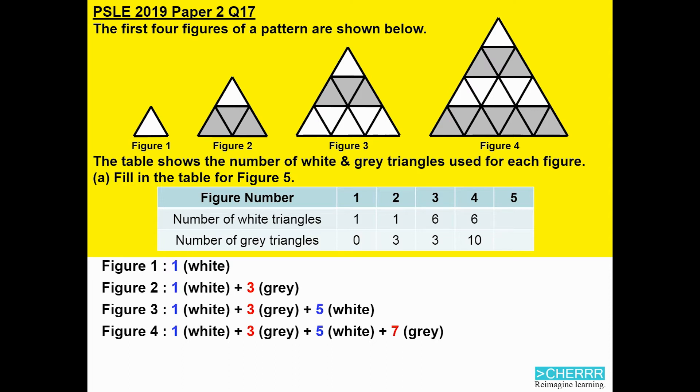Firstly, when we split them up, we know that we need to add all the odd numbers. Then, for the colours, first we start with white, then it will be white plus grey, then it will be white plus grey plus white, and white plus grey plus white, and so on. So, it is alternate.